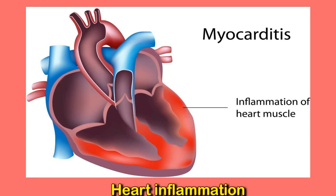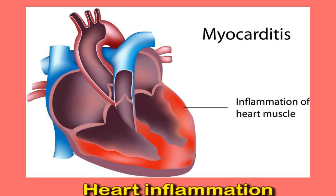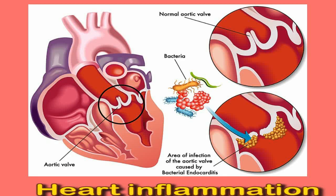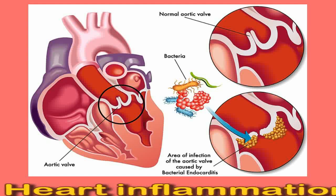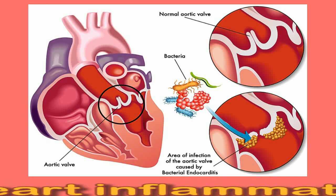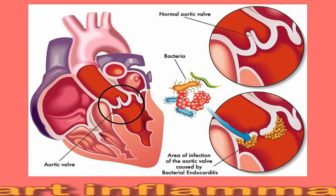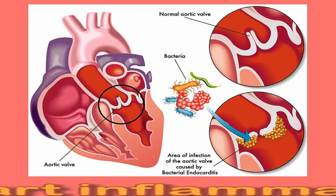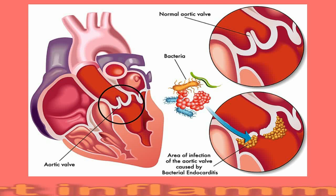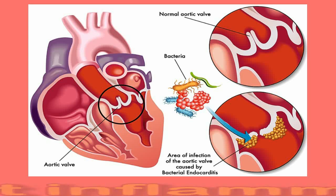Symptoms vary depending on the type and location of heart inflammation. Some people experience no symptoms, while others report severe symptoms such as sharp stabbing chest pain, abnormal heartbeat or heart murmur, difficulty breathing or shortness of breath, signs of an infection such as fever or chills, a persistent cough that may contain blood, muscle or joint pain, and swelling of the legs or feet.